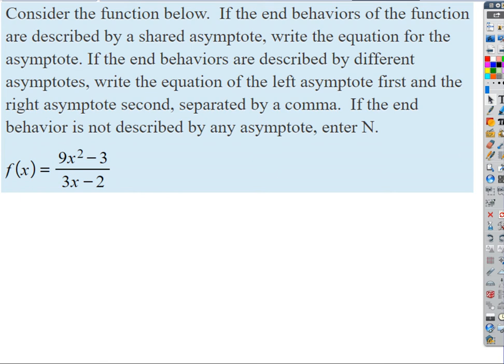If I had same degree polynomials top and bottom, what's the equation of the asymptote? Leading coefficients, right? Our limit would be the limit of the function at positive or negative infinity would just be the ratio of the leading coefficients. And so we would just get a horizontal asymptote, y equals that number, right?